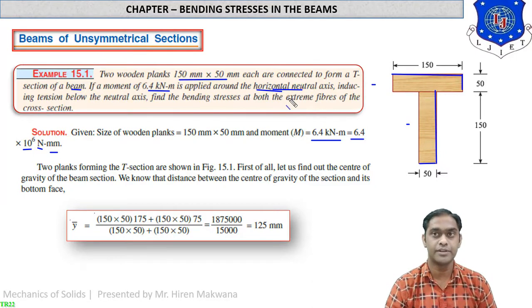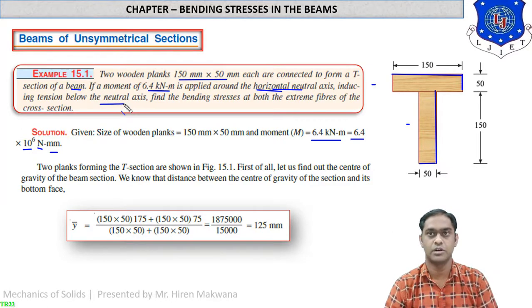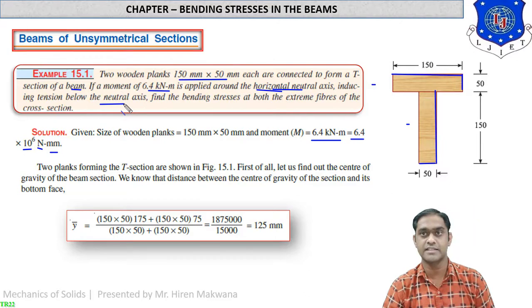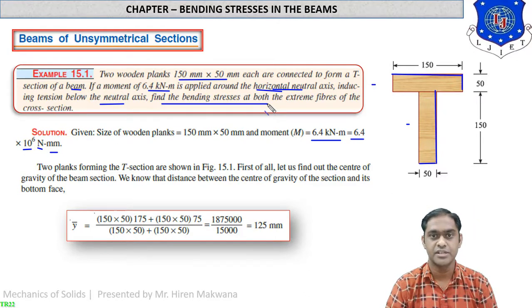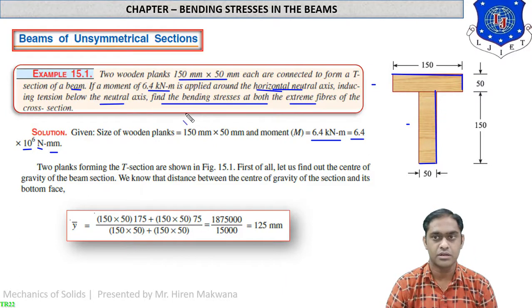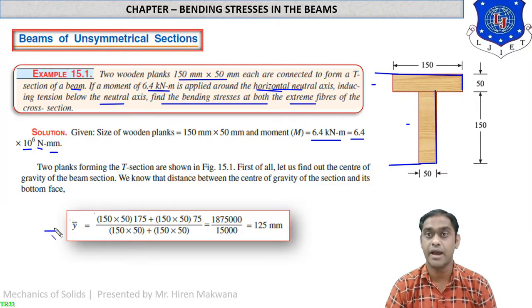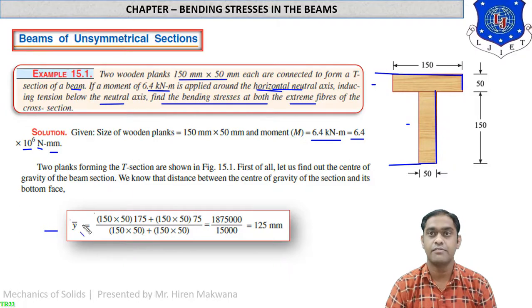The moment induces tension below the neutral axis, so the lower fibers are subjected to tension. We need to find the bending stress at both extreme fibers — the top fiber and the bottom fiber. Our first target is to find ȳ (y-bar), the center of gravity of the section. The formula is ȳ = (A₁y₁ + A₂y₂) / (A₁ + A₂).